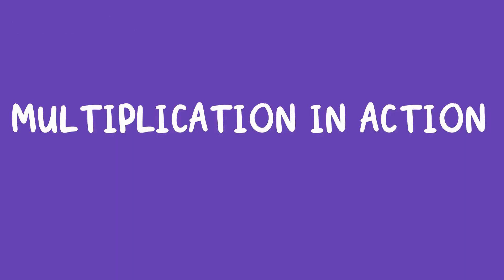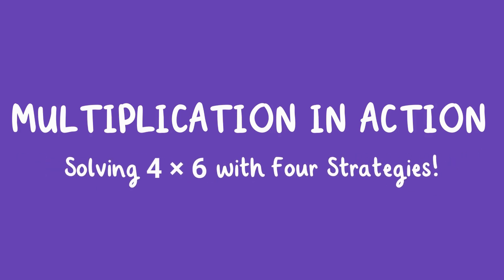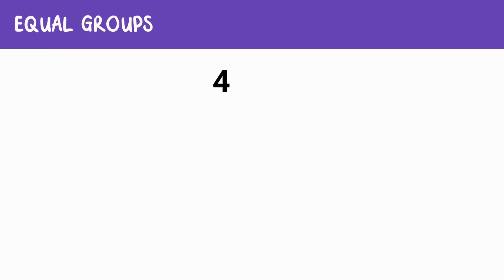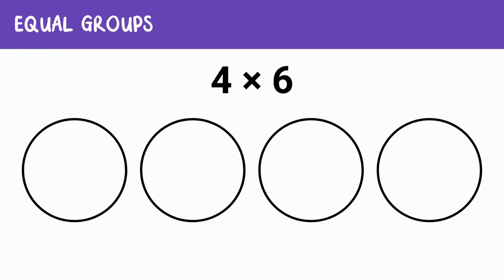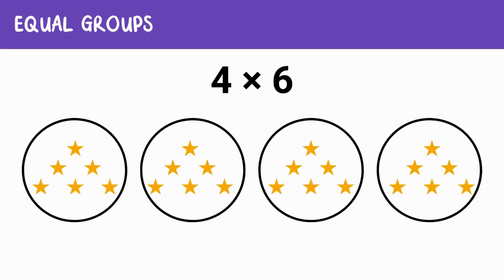Now let's wrap things up by using all four strategies we've learned to solve the same multiplication problem. Let's solve four times six — we'll look at it through equal groups, arrays, repeated addition, and a number line. First, we'll use equal groups. Imagine four groups, each with six items. When we count all the items, we see there are 24 in total. So four times six equals 24.